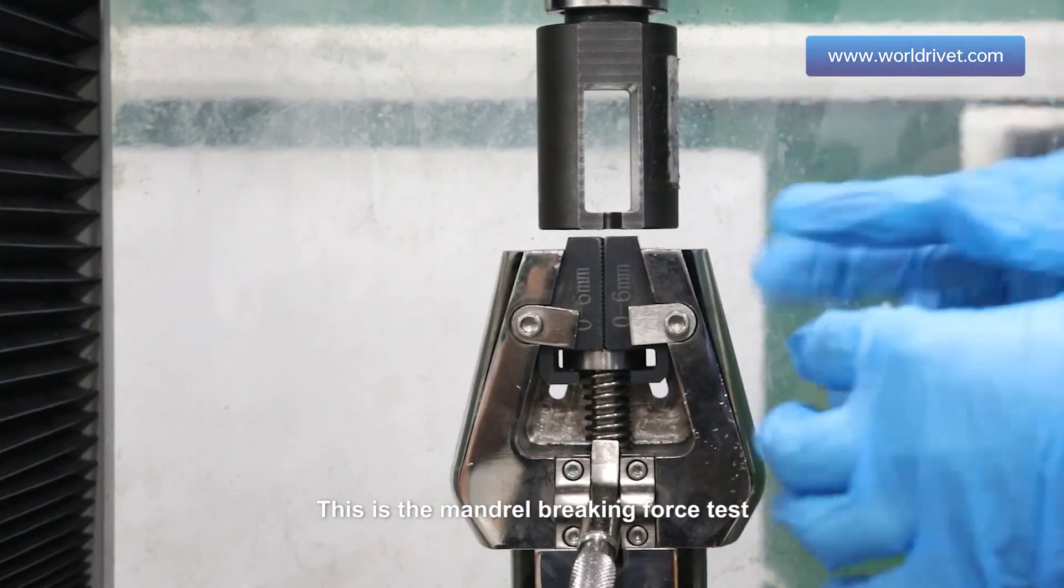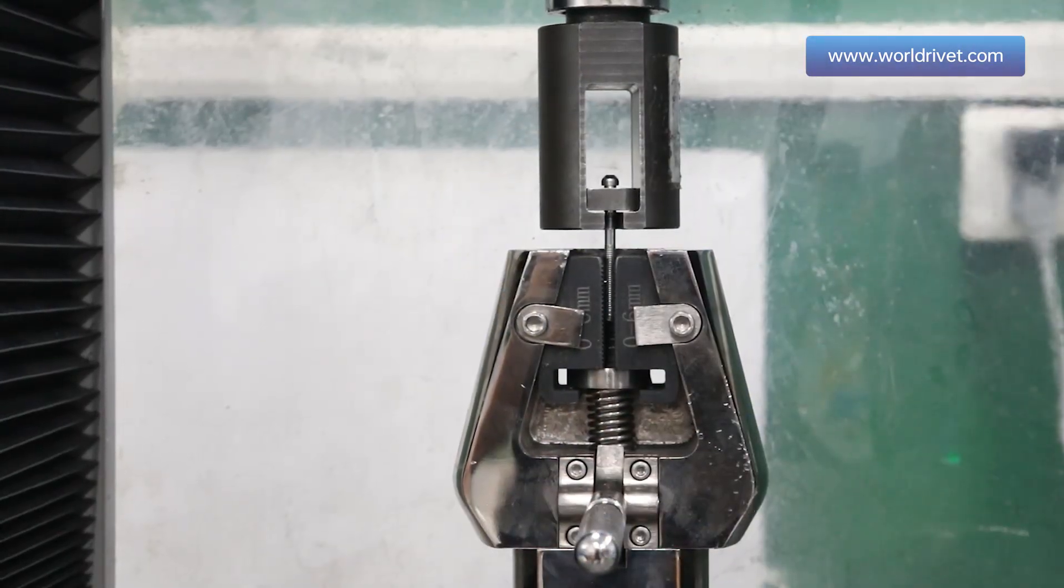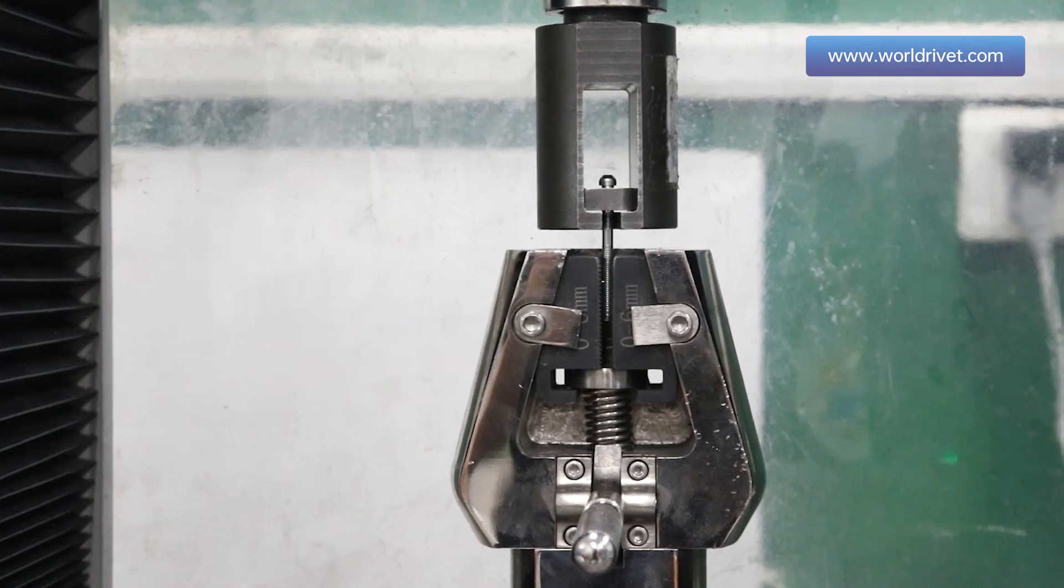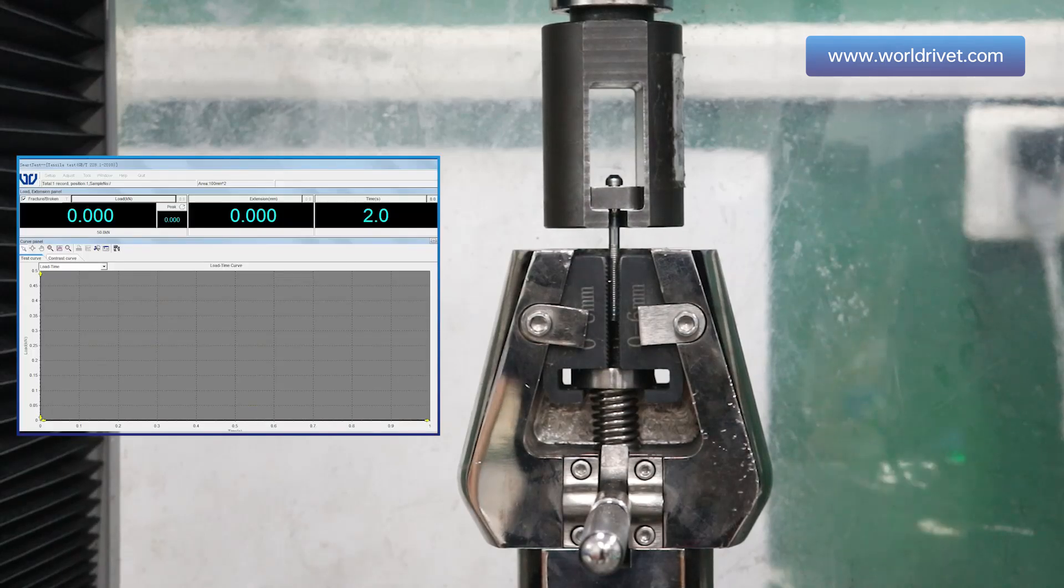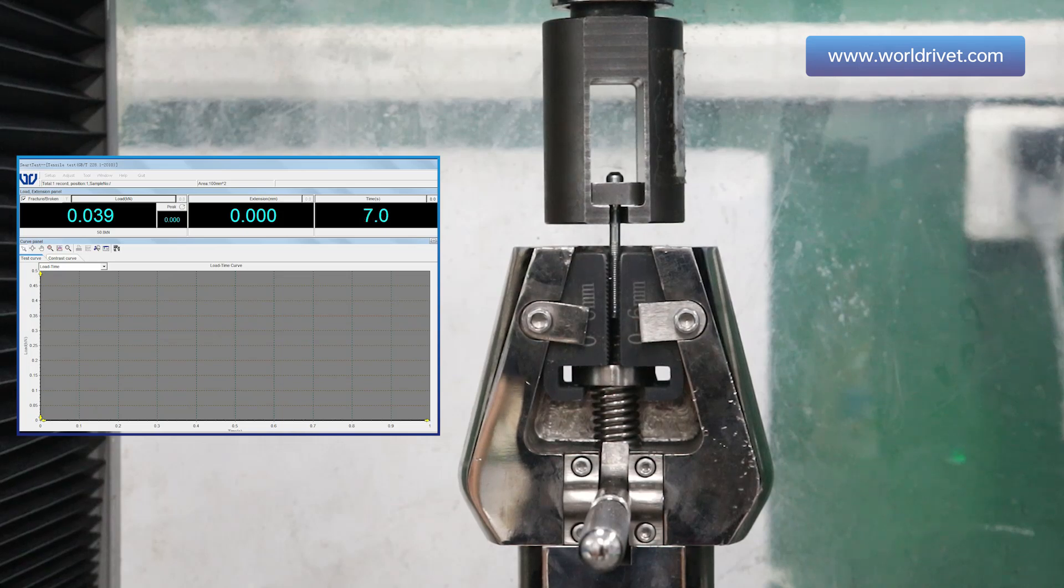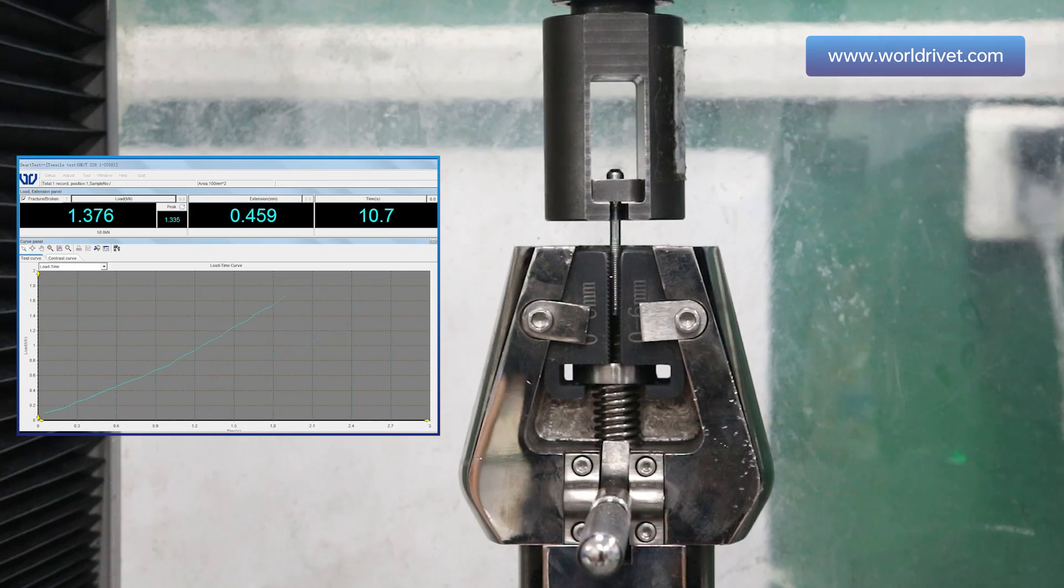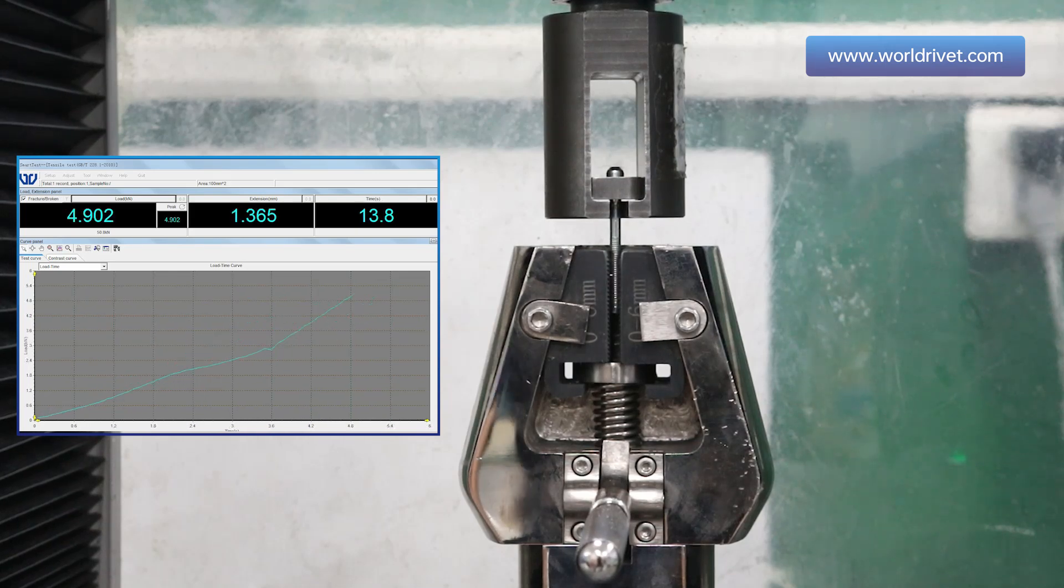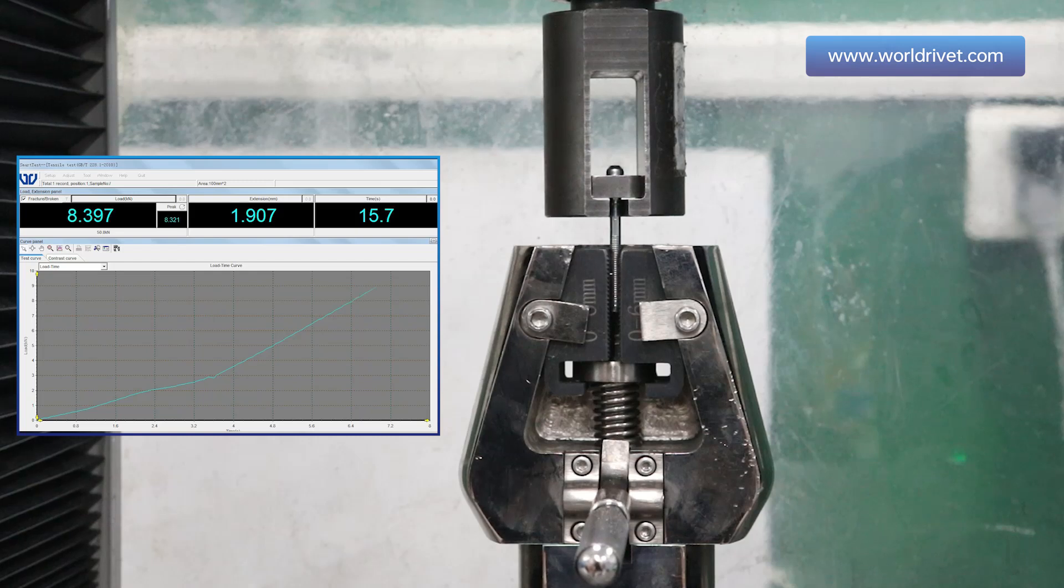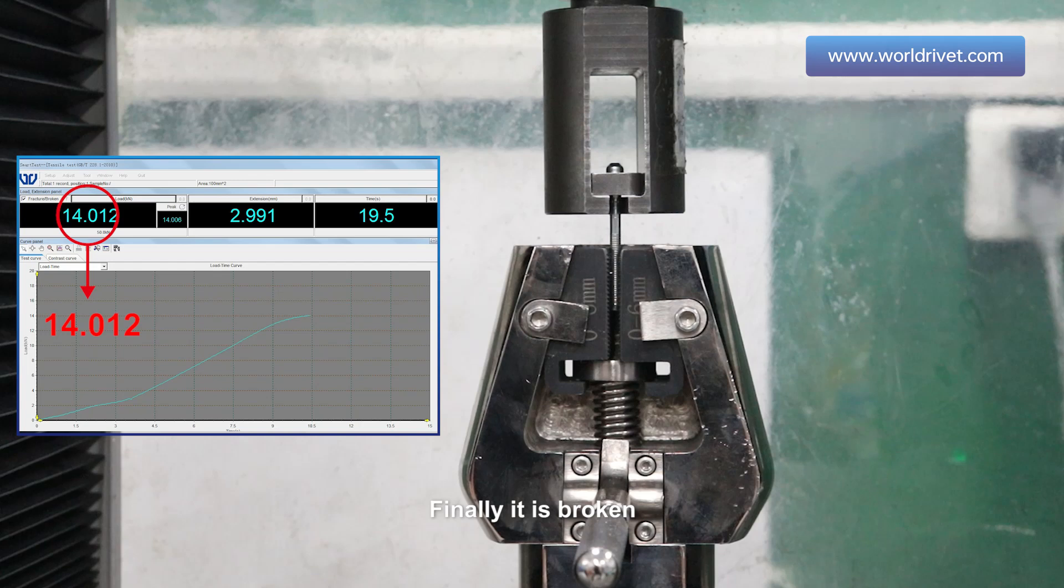This is the mandrel breaking force test. The mandrel is already set in the fixture. It is moving and pulling up. Finally, it is broken. The result value is 14012 N.